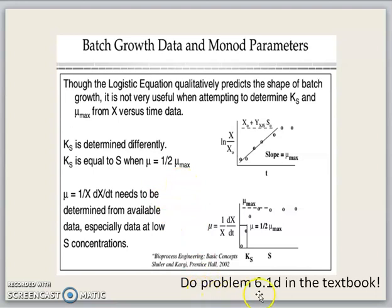Please do problem 6.1d in the textbook, in the Shuler and Kargi textbook. Then you will have the idea how to identify the mu_max and the Ks value by using the data given in the problem.